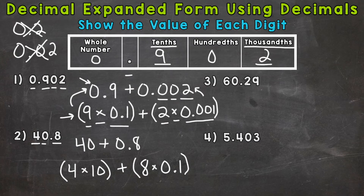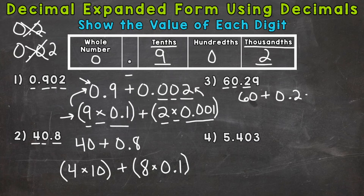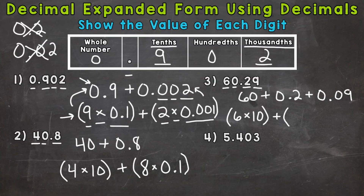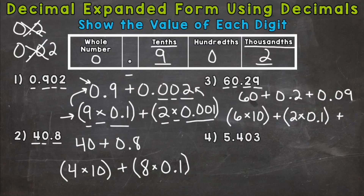On to number three, where we have 60 and 29 hundredths. We start with the six, which has a value of 60. Plus, we have a zero in the ones, so we move to the tenths — that two has a value of two tenths. Plus the nine in the hundredths, which has a value of nine hundredths. Using the parenthesis method: we have six in the tens place, or six times ten. Plus, a two in the tenths place. Plus, we end with a nine in the hundredths place — nine times one hundredth, which equals nine hundredths.